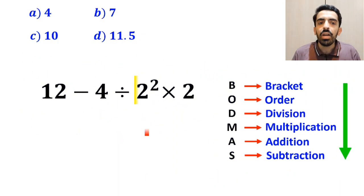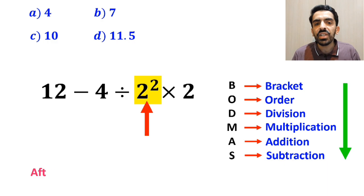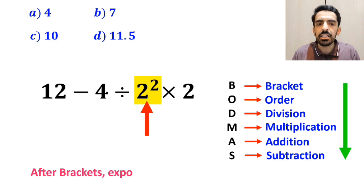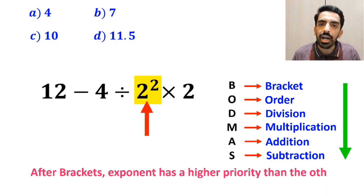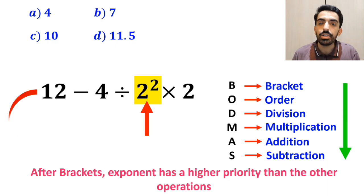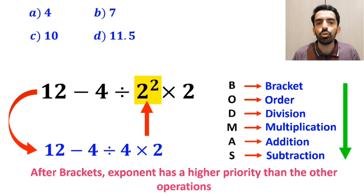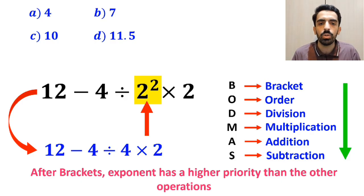In the next step, we go to the exponent, because after brackets, the exponent has a higher priority than the other operations. So this expression simplifies to 12 minus 4 divided by 4 times 2.